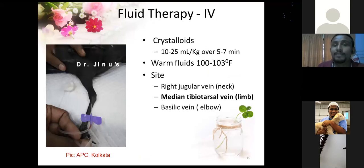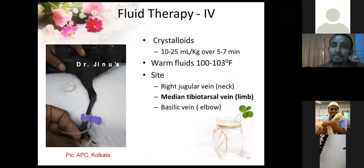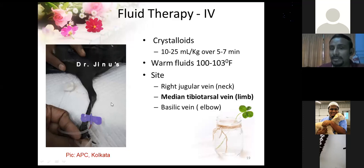Intravenous fluid therapy is the most advisable route. All crystalloids — Ringer's lactate, DNS — can be given at 10 to 25 ml per kg depending on dehydration status, administered slowly over 5 to 10 minutes. Warm the fluids to 100 to 103°F, just below the bird's body temperature of 106°F. Sites are the right jugular vein, the medial tibiotarsal vein, or the elbow basilic vein. This picture shows a house crow receiving IV fluids via the medial tibiotarsal vein, which I personally prefer.